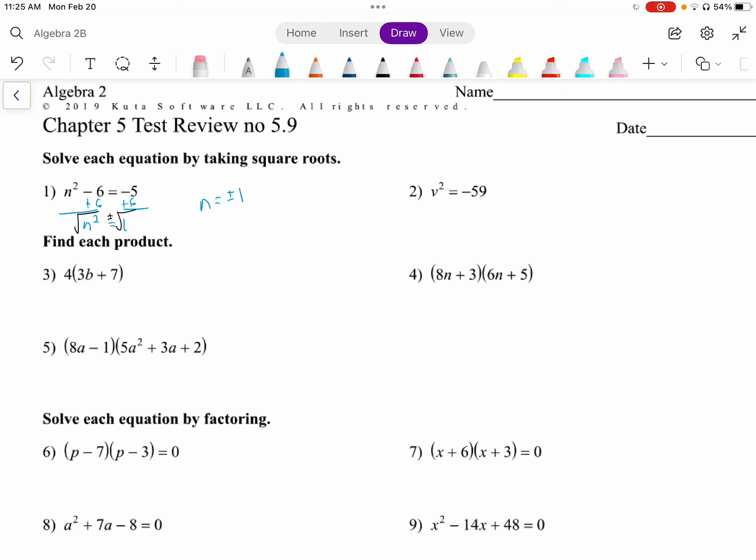We'll do number 2. It's very similar, although the quadratic term is already isolated. We take the square root. Make sure we put plus or minus. This is the square root of negative 59. Well, negative 59, we can't take the square root of a negative, so we definitely have an i, so the square root is 59i. And 59 does not have any perfect square factors, so it can't be simplified at all.